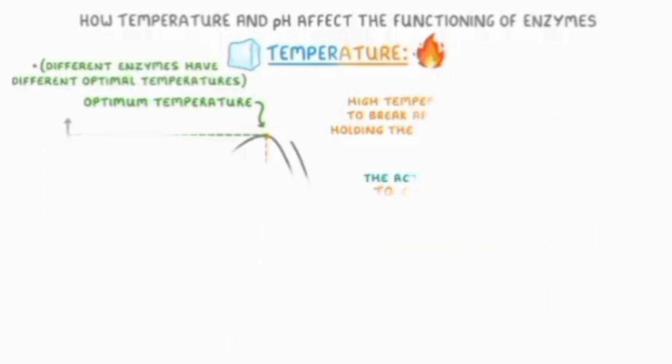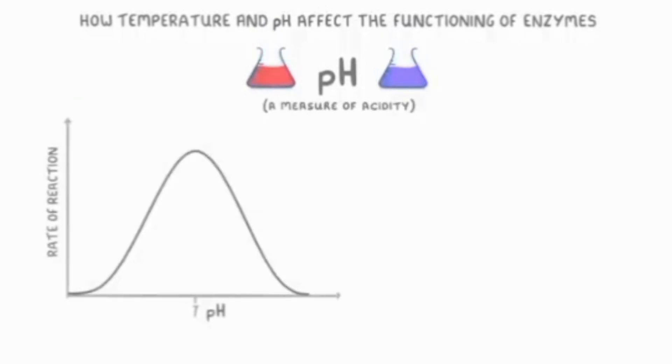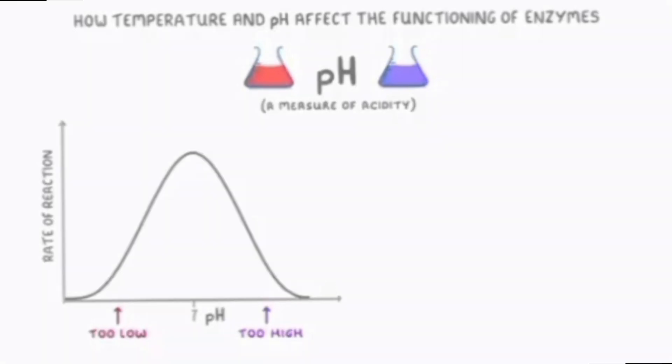Now the second factor which affects enzyme action is pH. pH is a measurement of acidity. In this graph, you can see that if pH becomes more or less than optimal, then the rate of reaction is slow. This is the same as in the high temperature case.